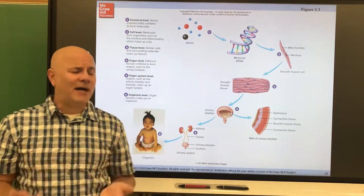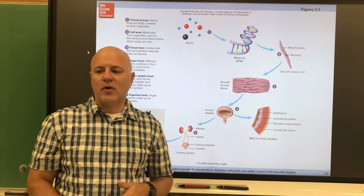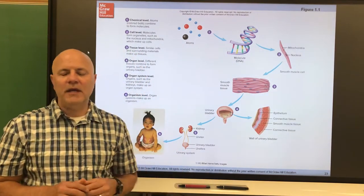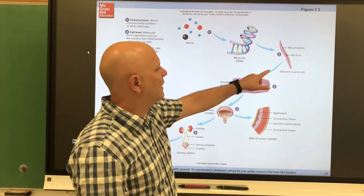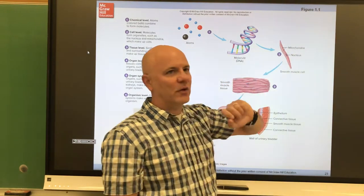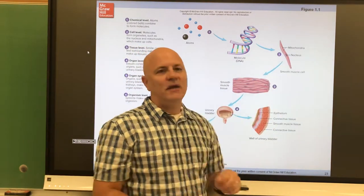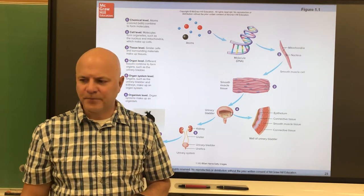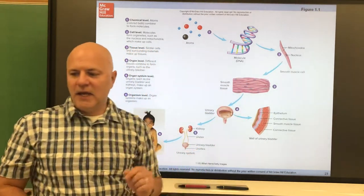A molecule can also be something like DNA, which has lots and lots of atoms in it. The next level of organization is the organelle level. An organelle is a part of a cell that performs a specialized function. Looking at a smooth muscle cell, two highlighted organelles are the mitochondria, which produce energy for the cell, and the nucleus, which houses our genetic material and acts as the control center.